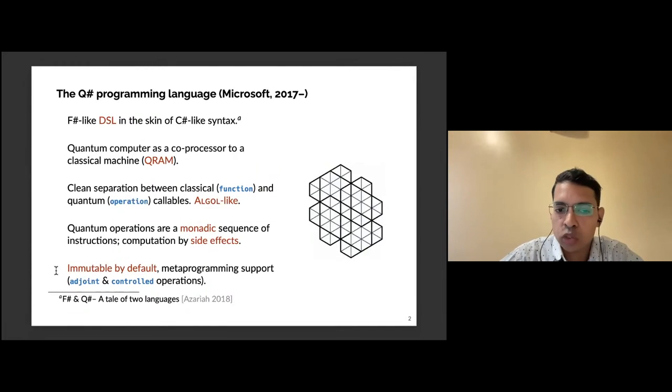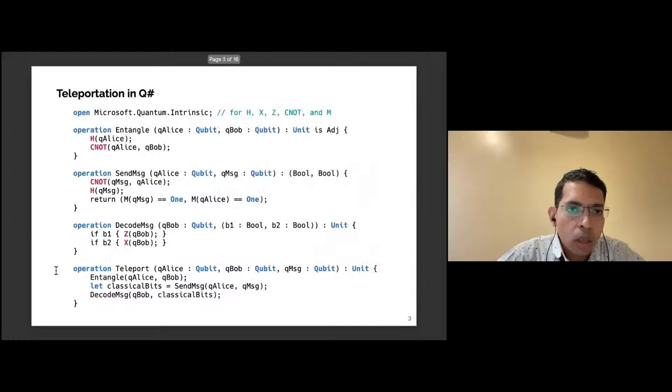Here's a sample program in QSharp to show teleportation. A couple things to highlight: QSharp is parametric on the gate set, so even to use the basic gates we have to import a library. The other thing to notice is that computations are by side effects. In this entangle function, the two qubits for Alice and Bob are passed and we are just applying operations on them. Notice that there is no qubit being returned—this is the monadic interface in play. There's no linearity involved, so qubits are passed by reference.